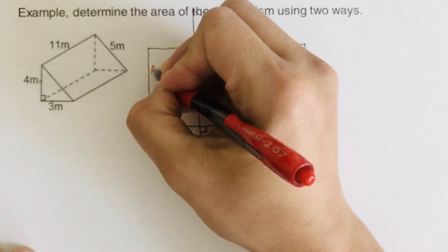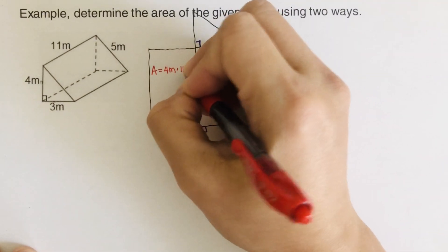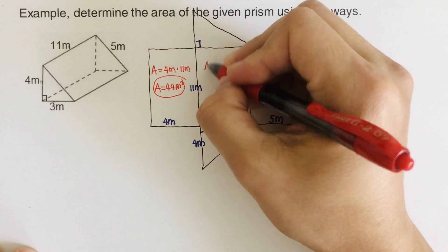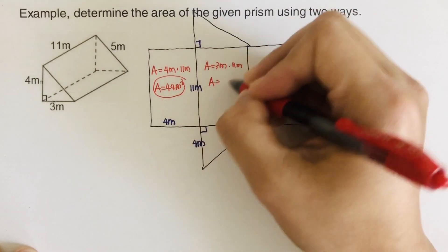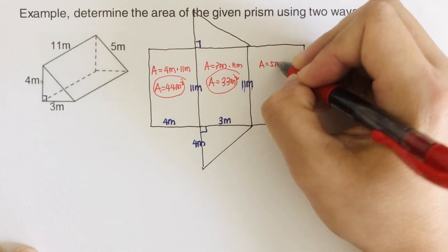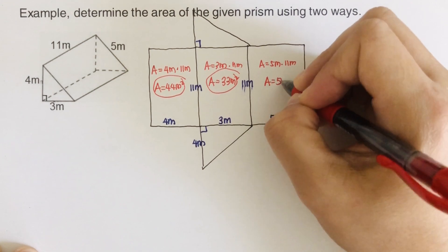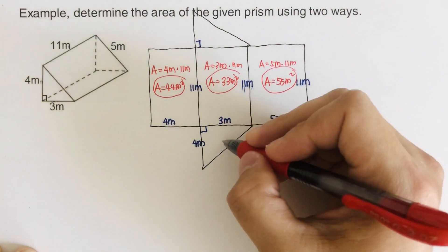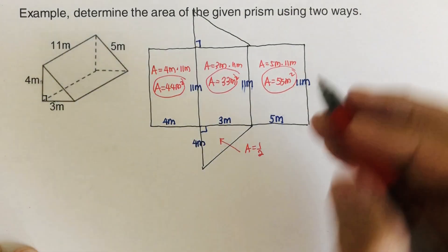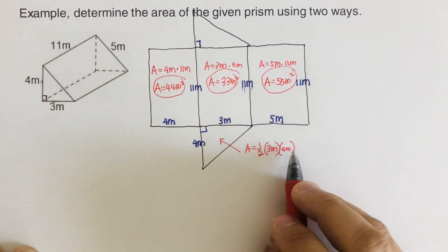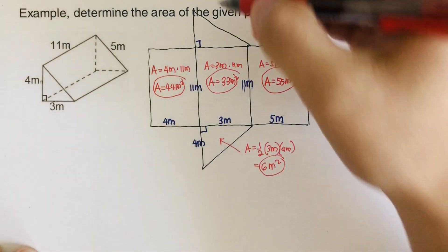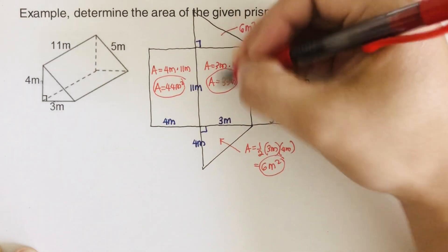This is the surface area for the triangular prism. The area of the first rectangle is 4 meters times 11 meters = 44 meters squared. The next rectangle: 3 meters times 11 meters = 33 meters squared. The third rectangle: 5 meters times 11 meters = 55 meters squared. For the triangular flap, since it is a right triangle, the area is half of the two perpendicular sides: half of 3 meters times 4 meters = half of 12 = 6 meters squared.